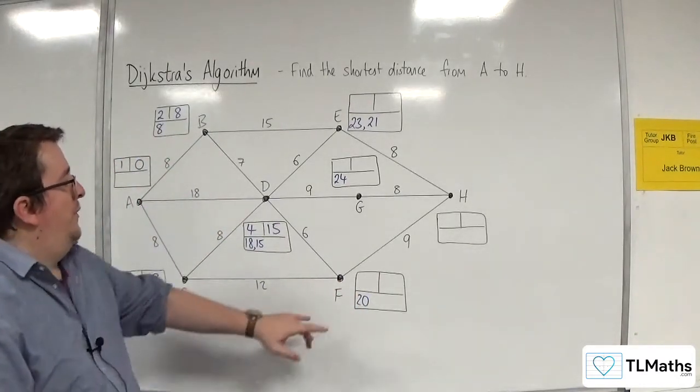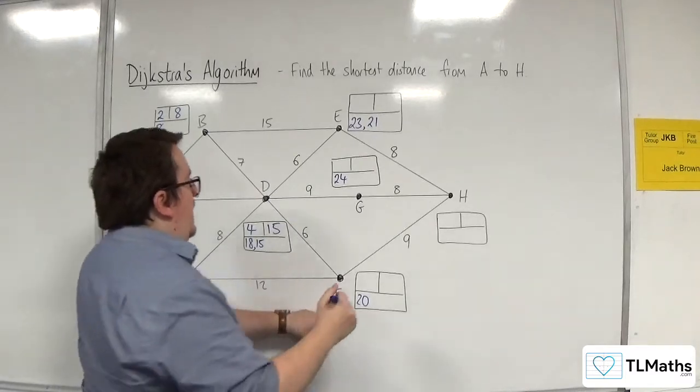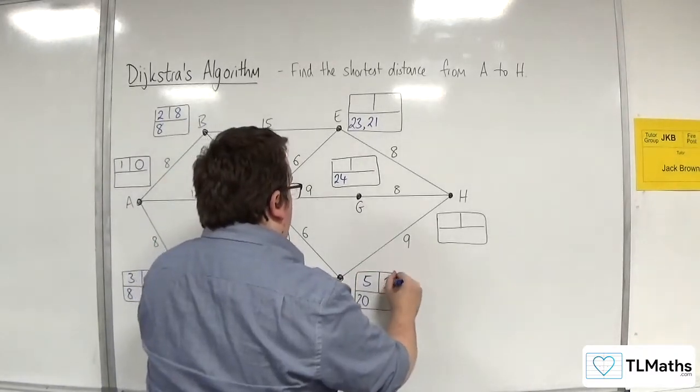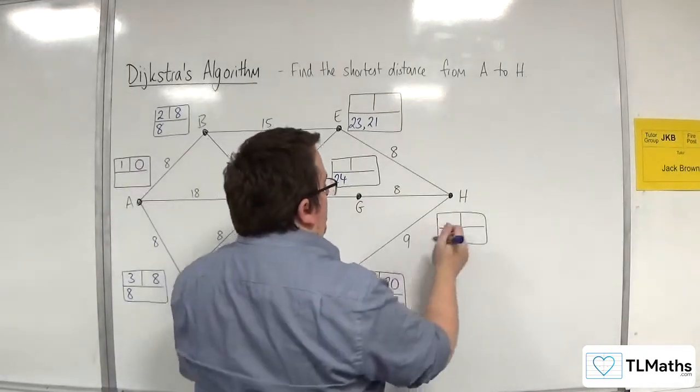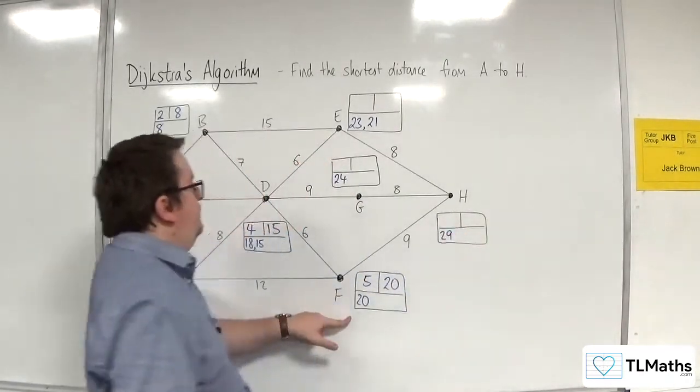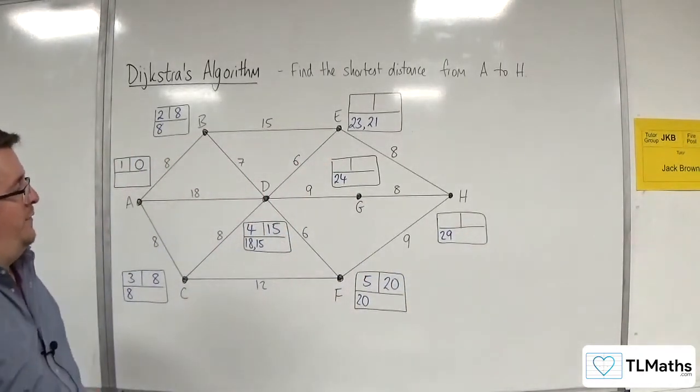Okay, so the next shortest is F, so that gets picked 5th, 20 goes in the final value box. 20 plus 9 is 29. Okay, I've exhausted all routes out of F.